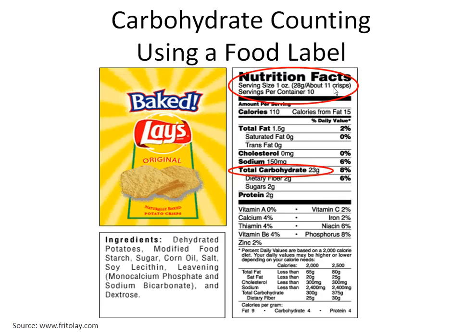So we recommend for you to use a food scale for accurate carbohydrate counting. If you weigh the crisps on a food scale, you can weigh it either in ounces or in grams. Remember, the weight in grams is not the grams of carbohydrate.